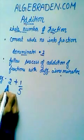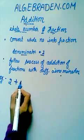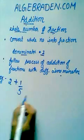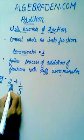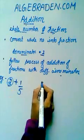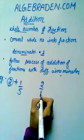For example, we have a whole number 2 plus a fraction 1 over 5. So first we need to convert the whole number into a fraction. It can be written as 2 over 1.